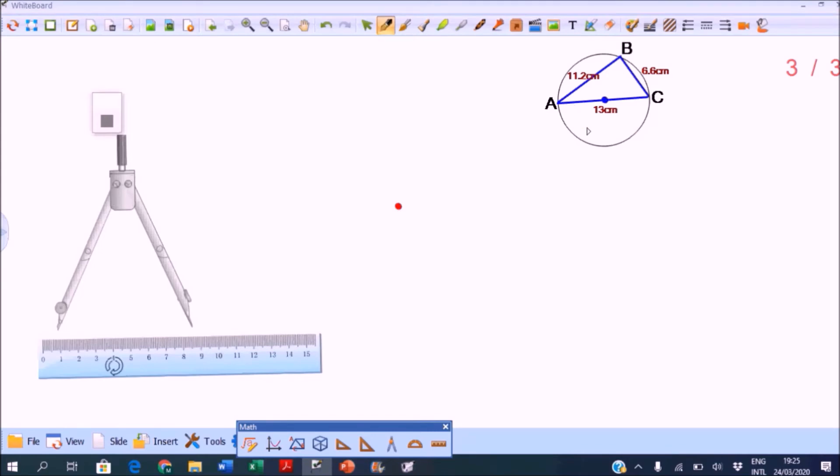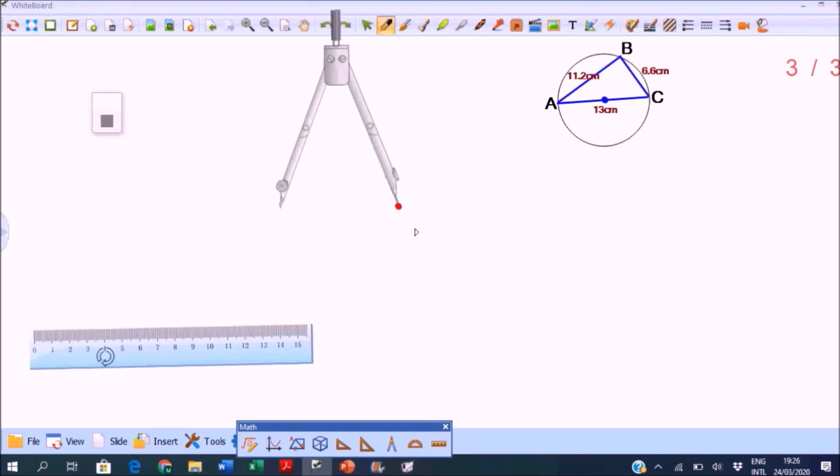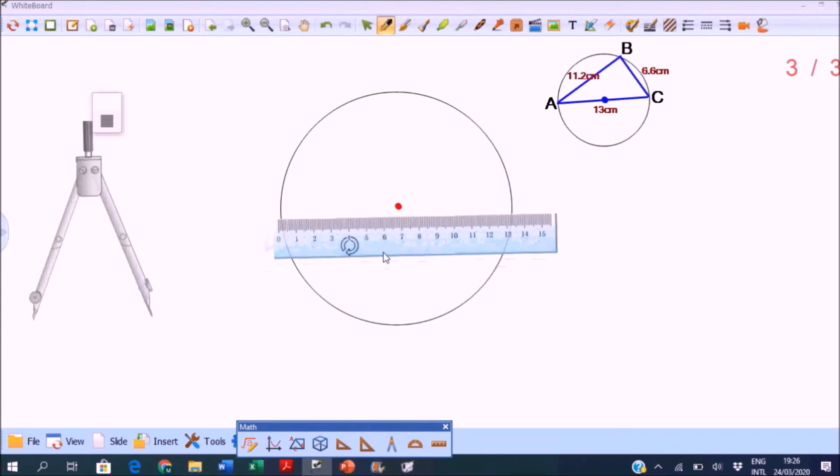Then open the compass to 6.5, that's half of the 13 centimeters diameter. Adjust your compass accordingly, then place the compass needle on the center point and draw the circle carefully. Use the ruler to draw the diameter. Check that this is 13 centimeters.